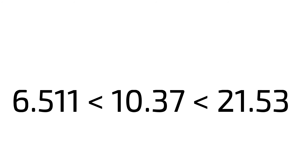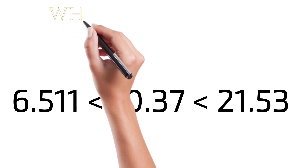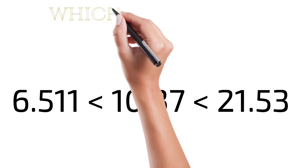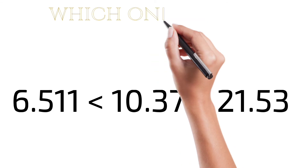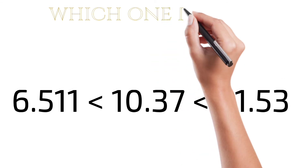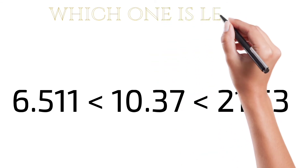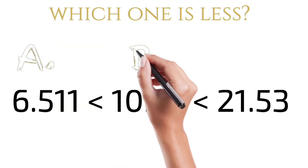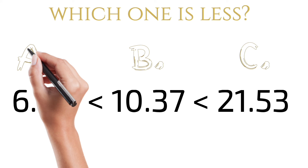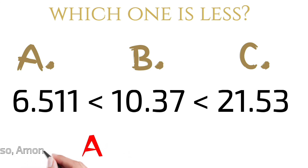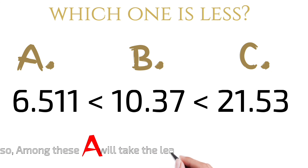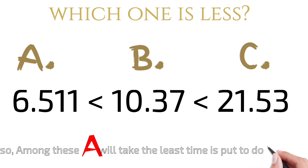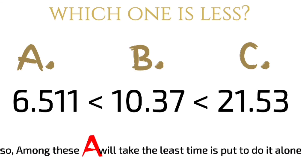A's value came out to approximately 6.5 days. B's came out to 10.37 days. C's came out to 21.57 days. Among these three values, the least is obviously 6.5. So the answer is: among these, A will take the least time if put to do it alone.